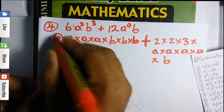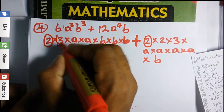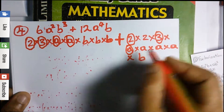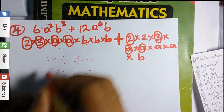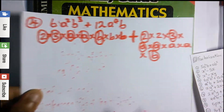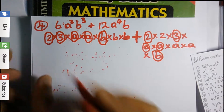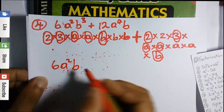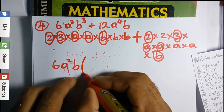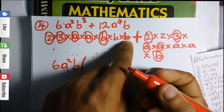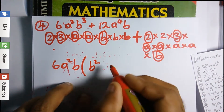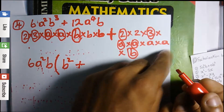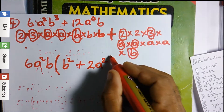Scanning both sides: 2 times 3 is 6, which is common on both sides. a times a is a squared, and b is common. So 6a²b is common on both sides. Open a bracket: what's left on the first side is b times b, which is b². On the second side, we have 2 times a times a, which is 2a². The answer is 6a²b(b² + 2a²).